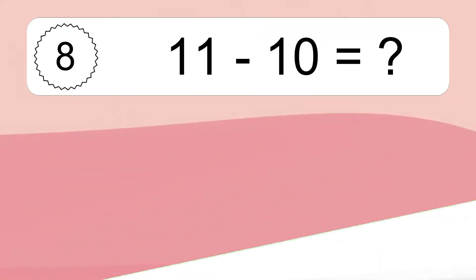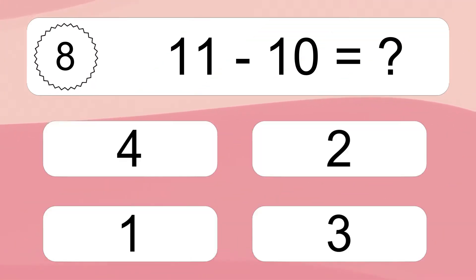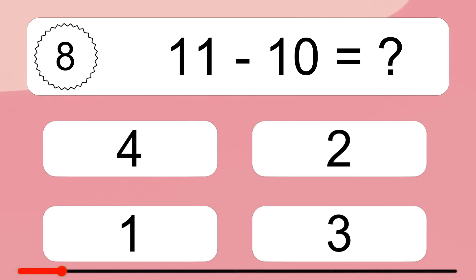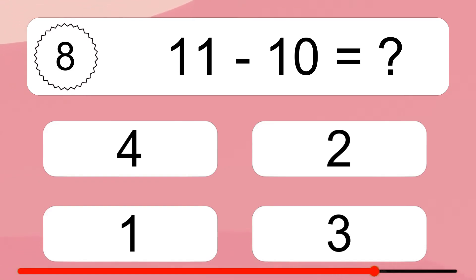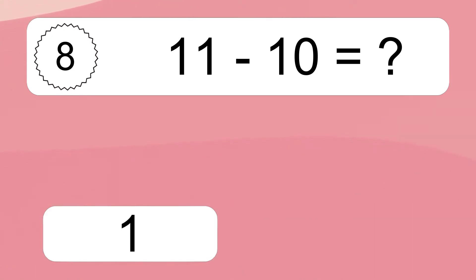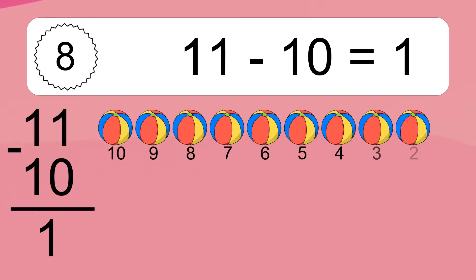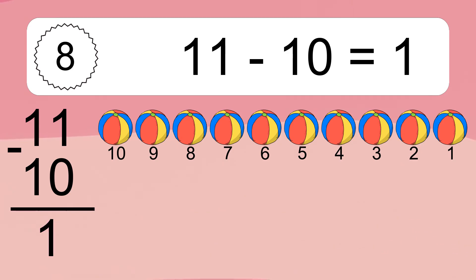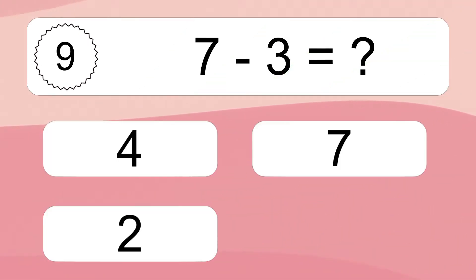11 minus 10 equals what? 11 minus 10 equals 1. Let's count it. 10, 9, 8, 7, 6, 5, 4, 3, 2, 1.